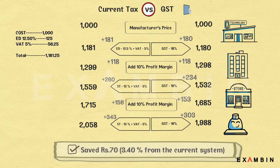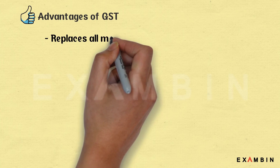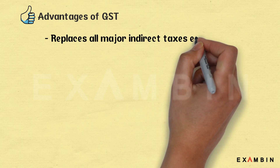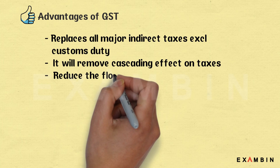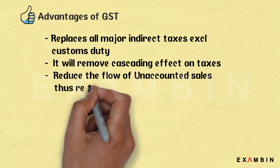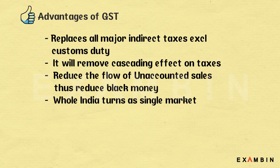We have understood that there may not be a major impact if rates are kept at the same level, but the government will always be keen to safeguard the tax level so it does not lose revenue. However, GST still has great advantages when implemented — it replaces all major indirect taxes excluding customs duty on some parts, removes the cascading effect on taxes, and reduces the flow of unaccounted sales, thus reducing black money.